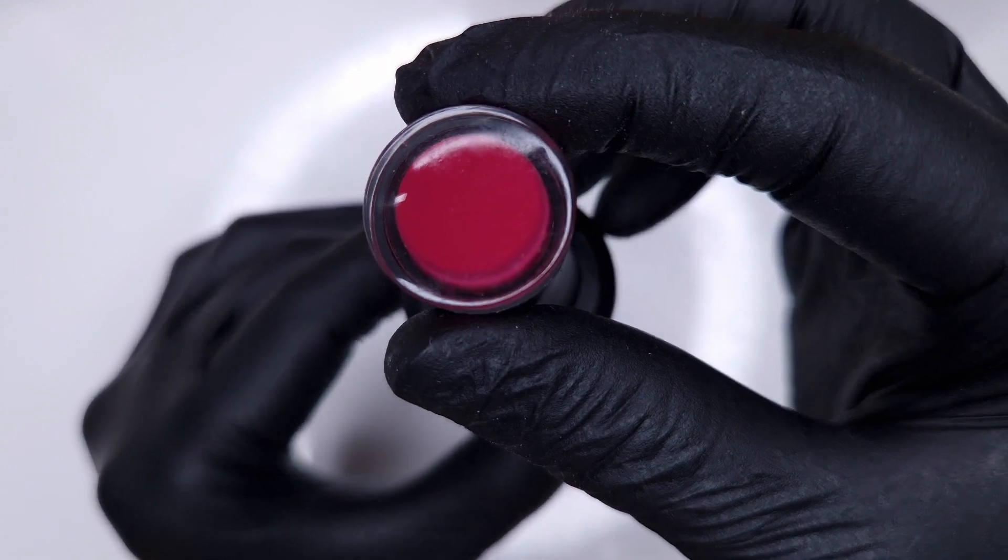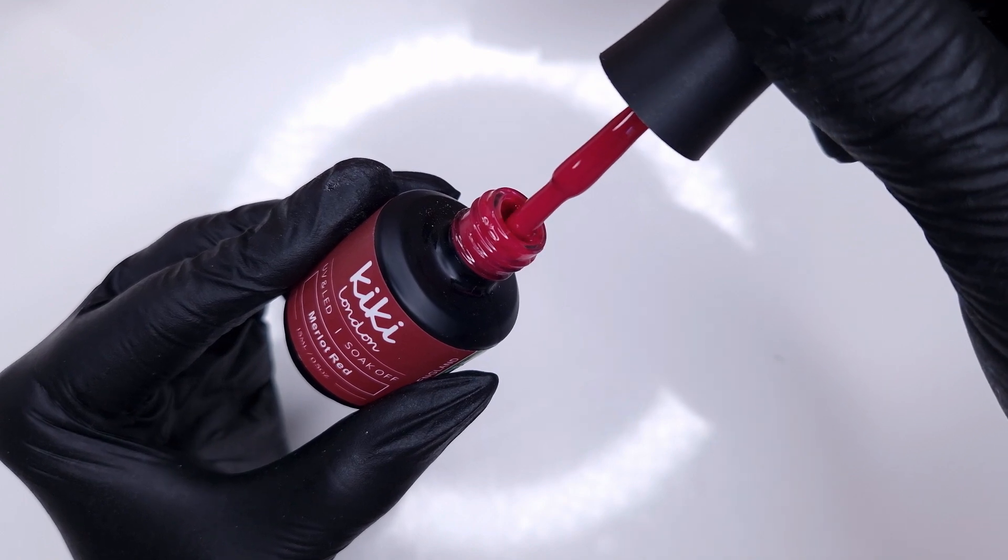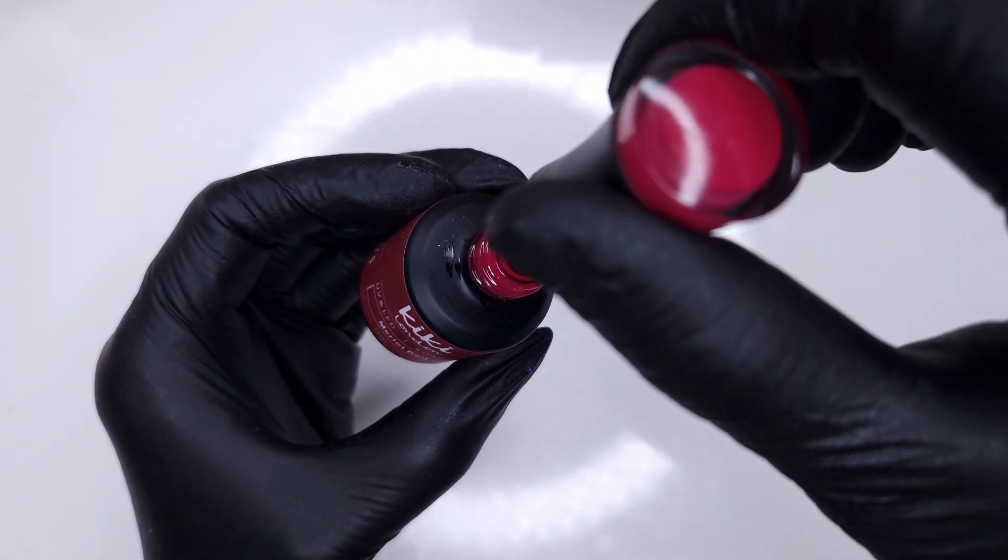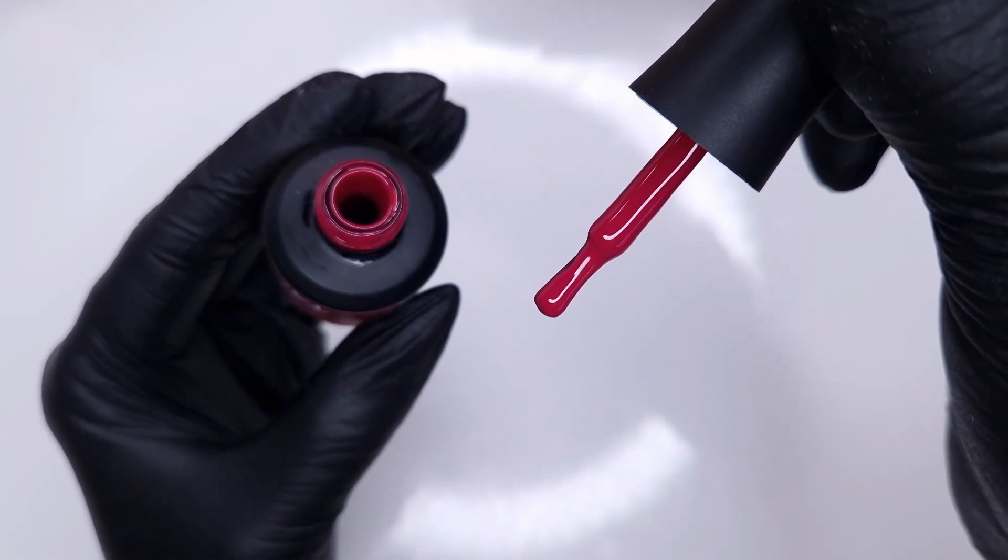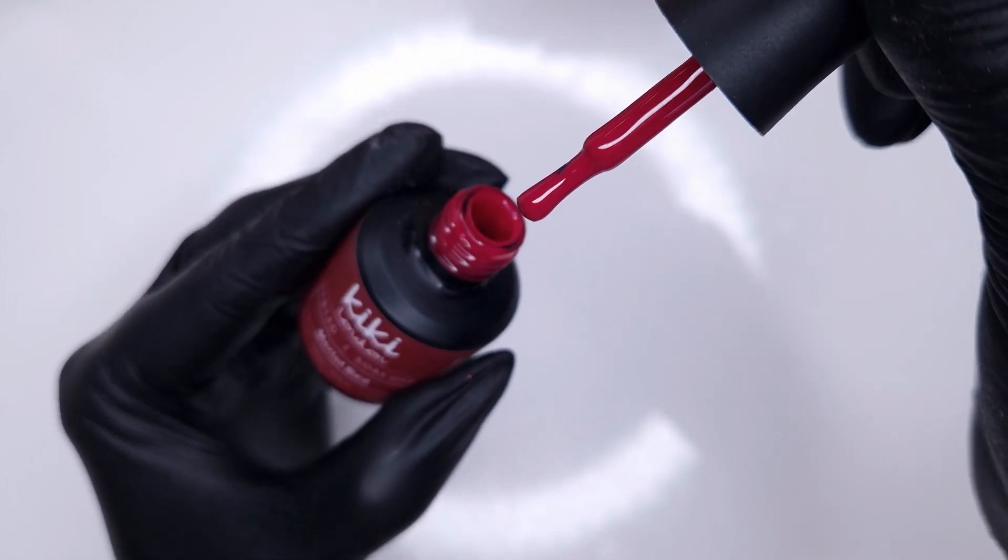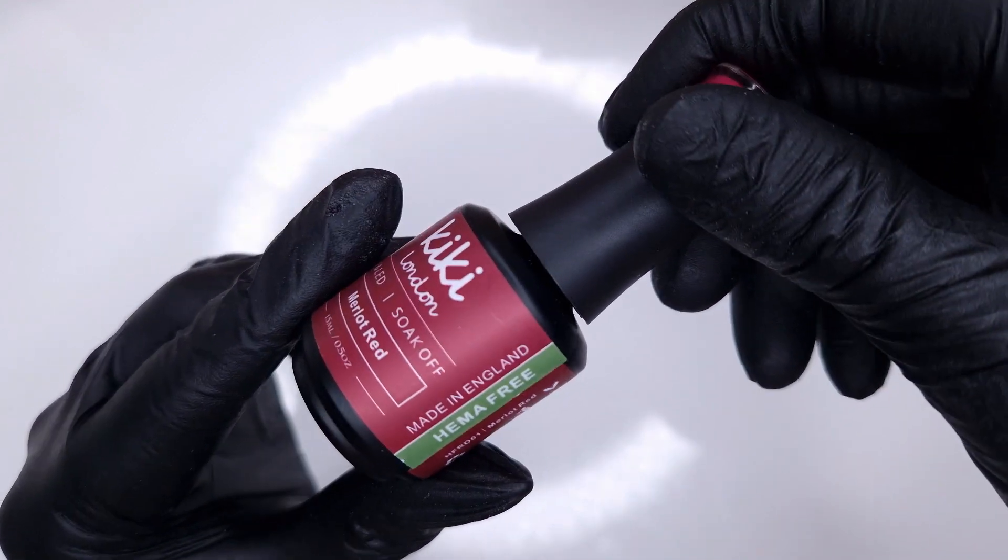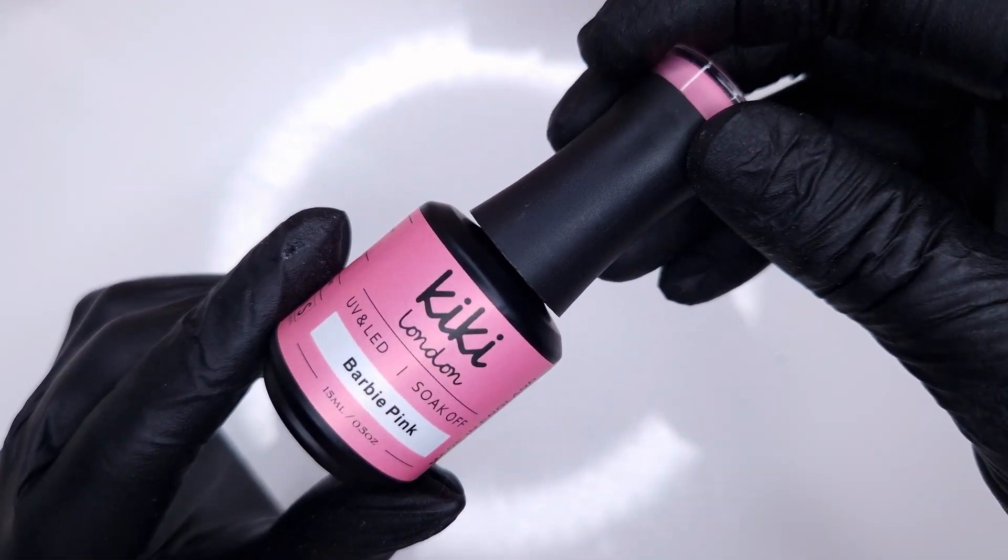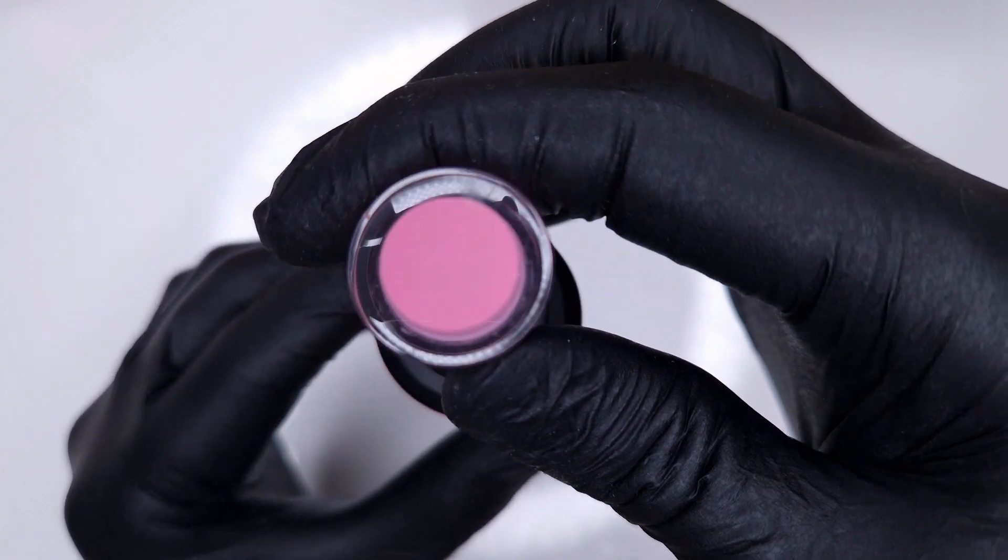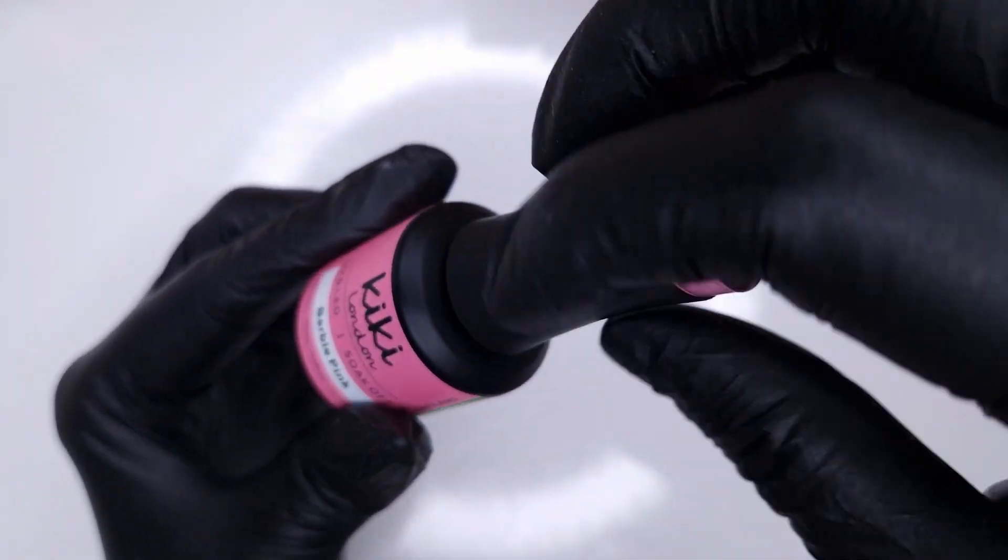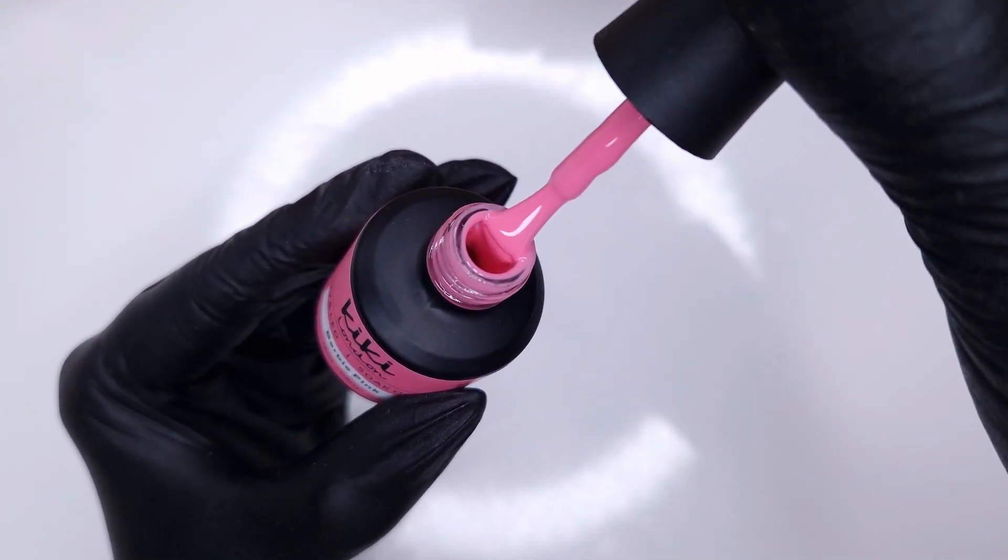Next we have Merlot Red. Now this red in particular, this color in particular shows up a lot more red on camera than it does in real life. It's kind of like somewhere between a fuchsia pink and a red. It's a really gorgeous shade but no matter how much I played around with my lighting it just shows up more red on camera than that fuchsia tone that it has to it.